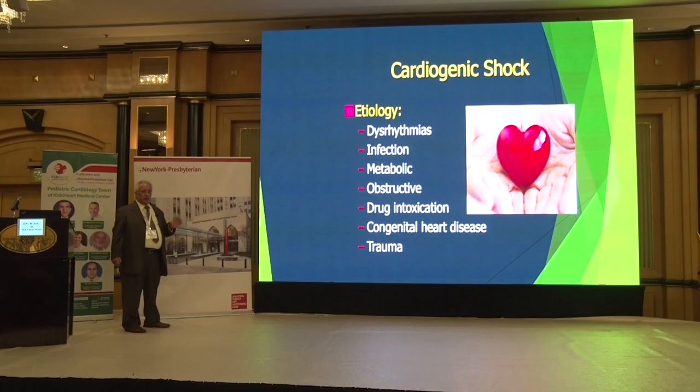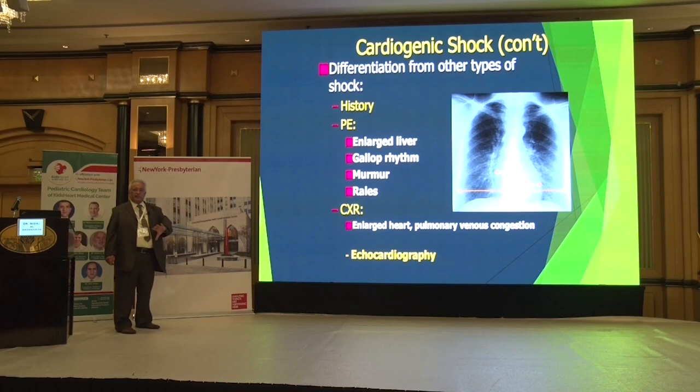In cardiogenic shock, the causes include dysrhythmia, infection, metabolic disturbance, obstruction, drug intoxication, congestive heart failure, and trauma. How do we differentiate? History is very important. On examination, look at the size of the liver. If you hear a gallop rhythm, that alone is diagnostic for heart failure.